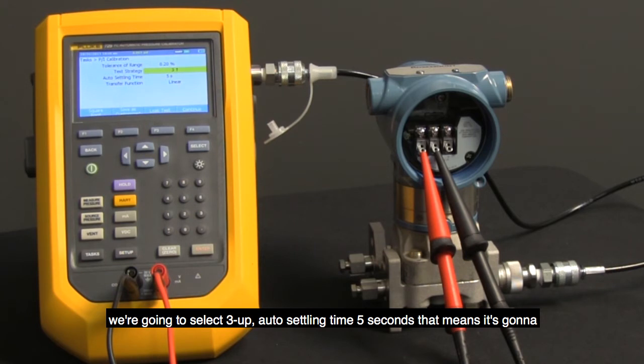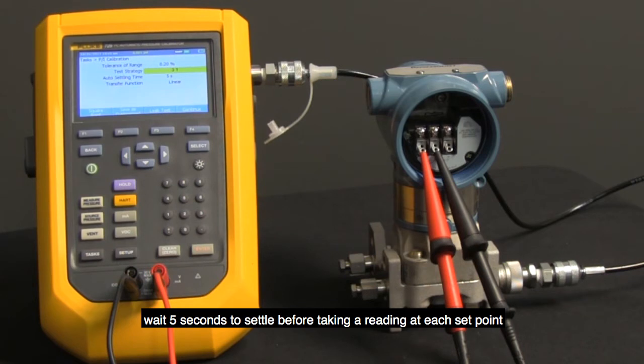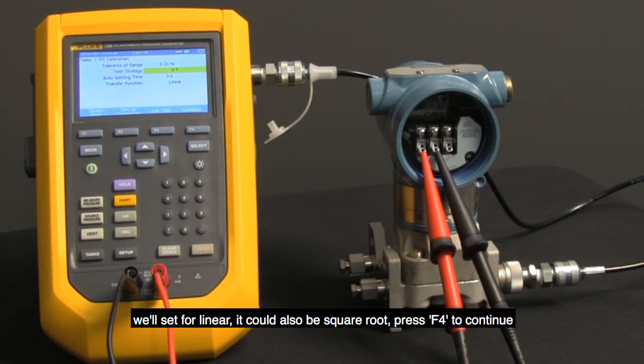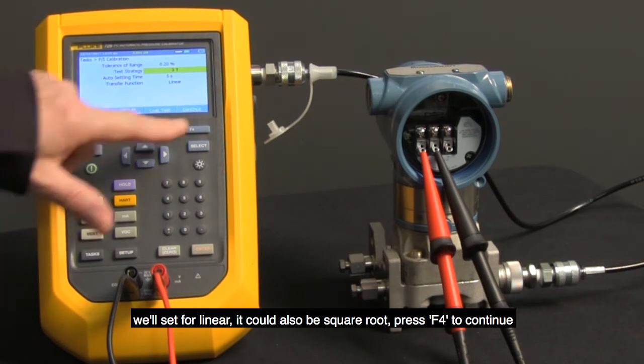Auto settling time, five seconds. That means it's going to wait five seconds to settle before taking a reading at each set point. And then the auto transfer function we'll set for linear. It could also be square root. Press F4 to continue.